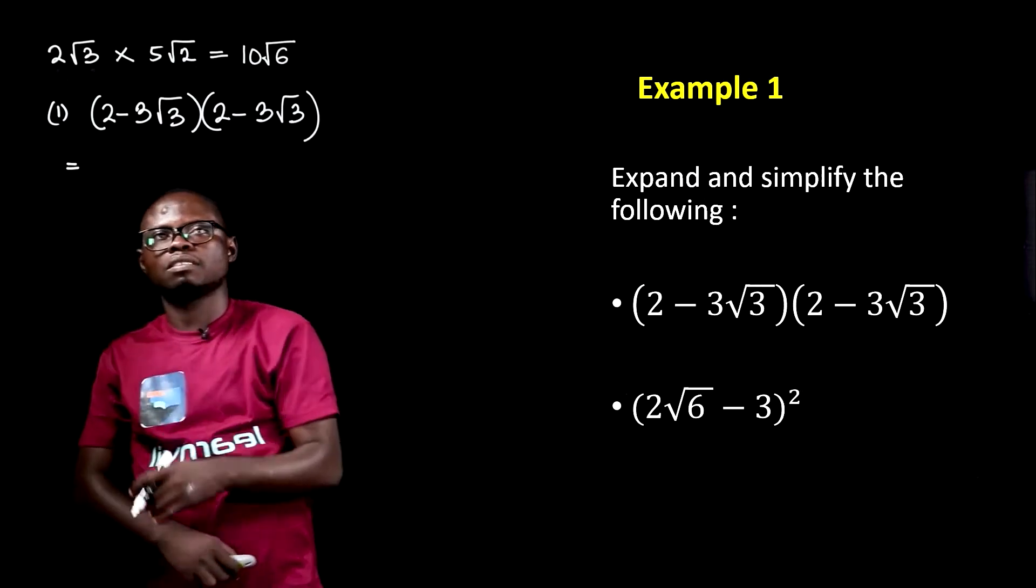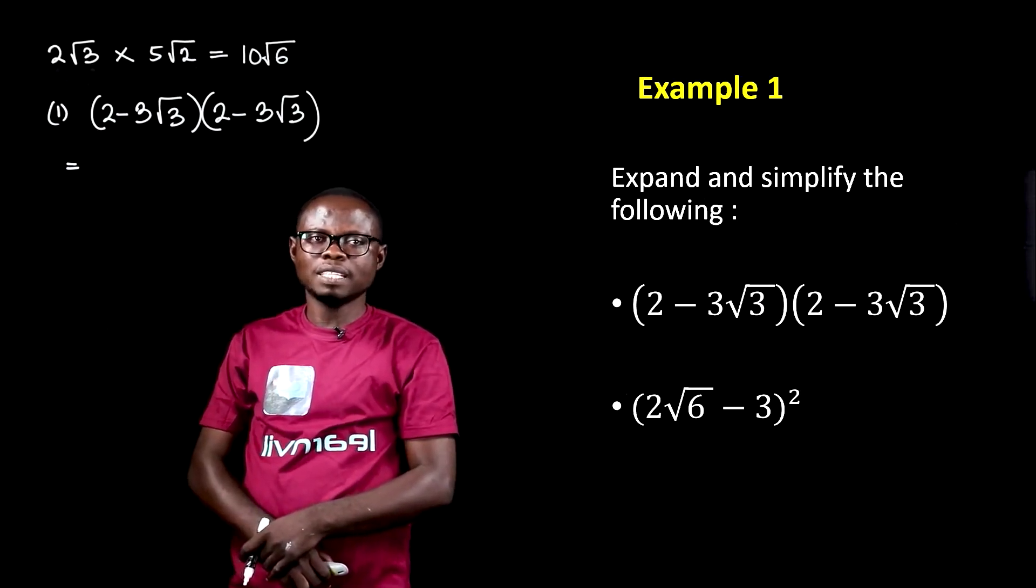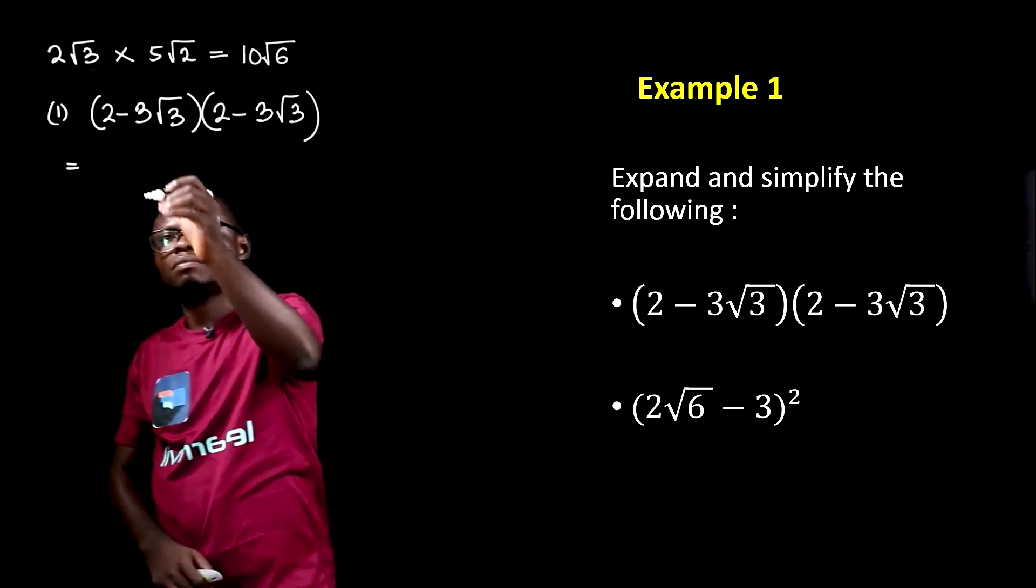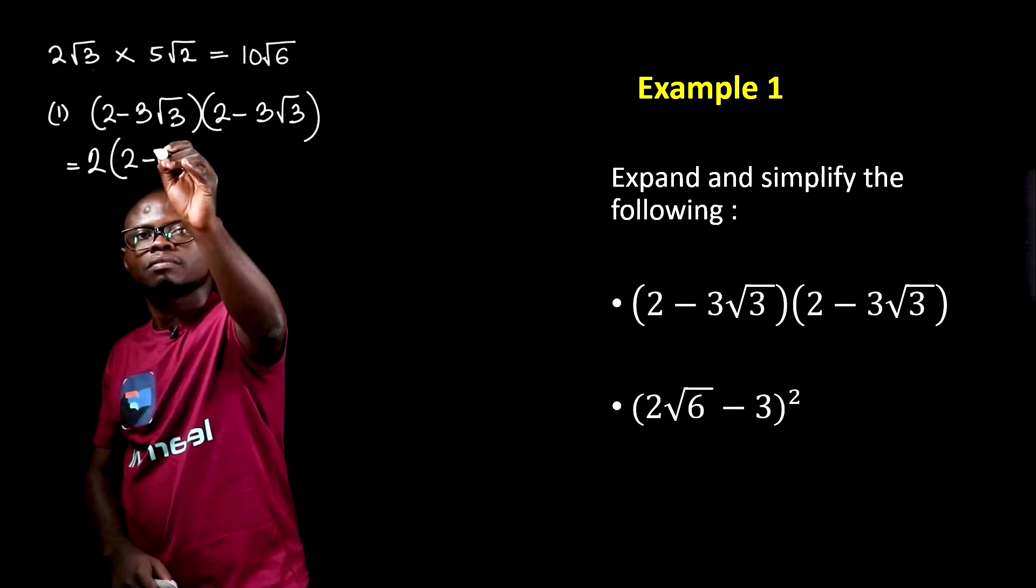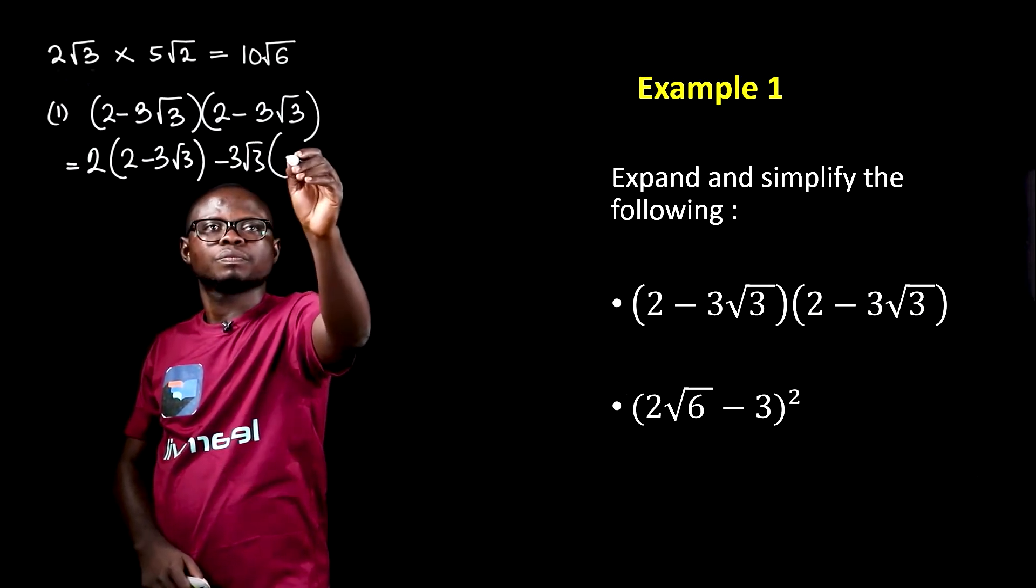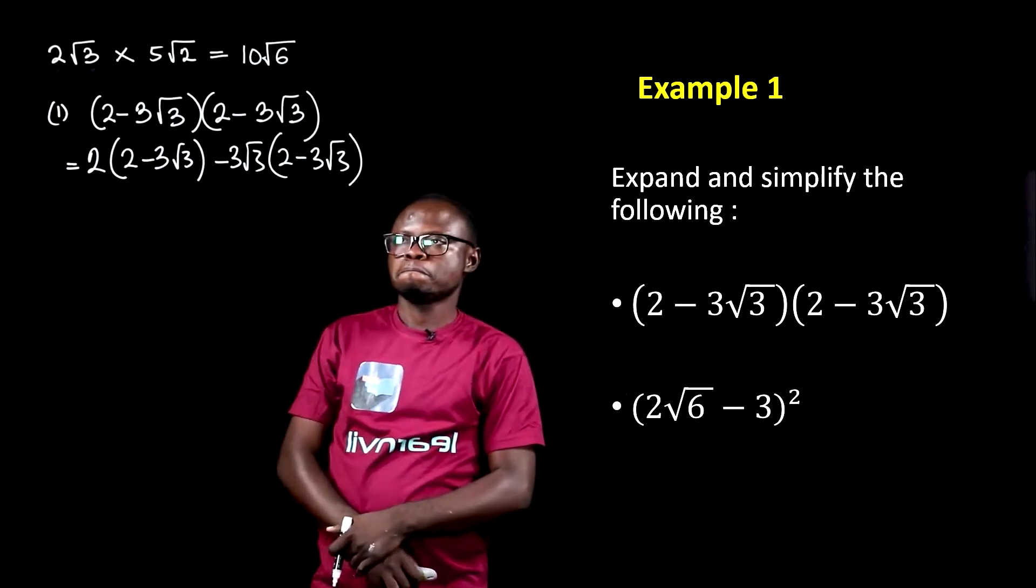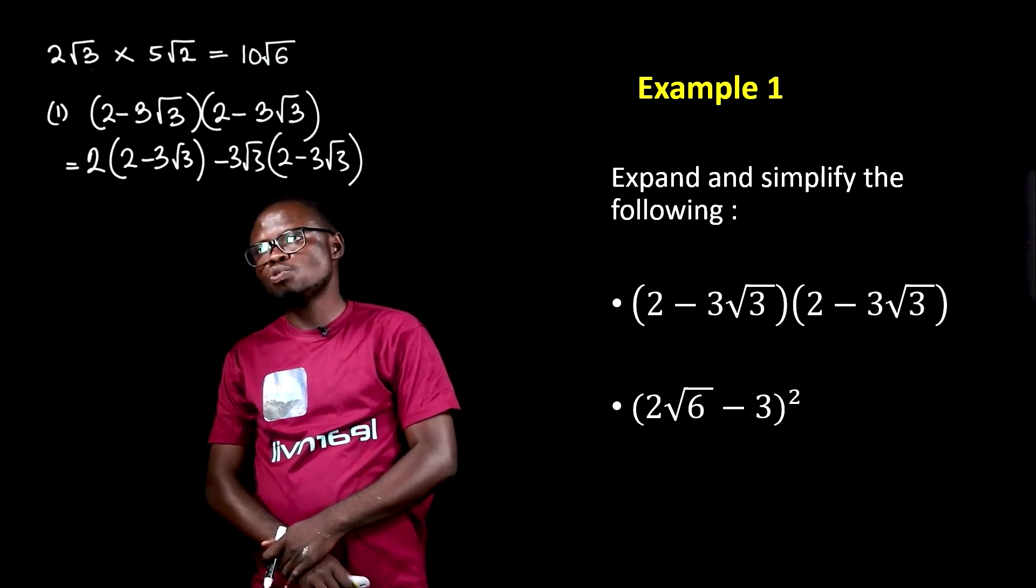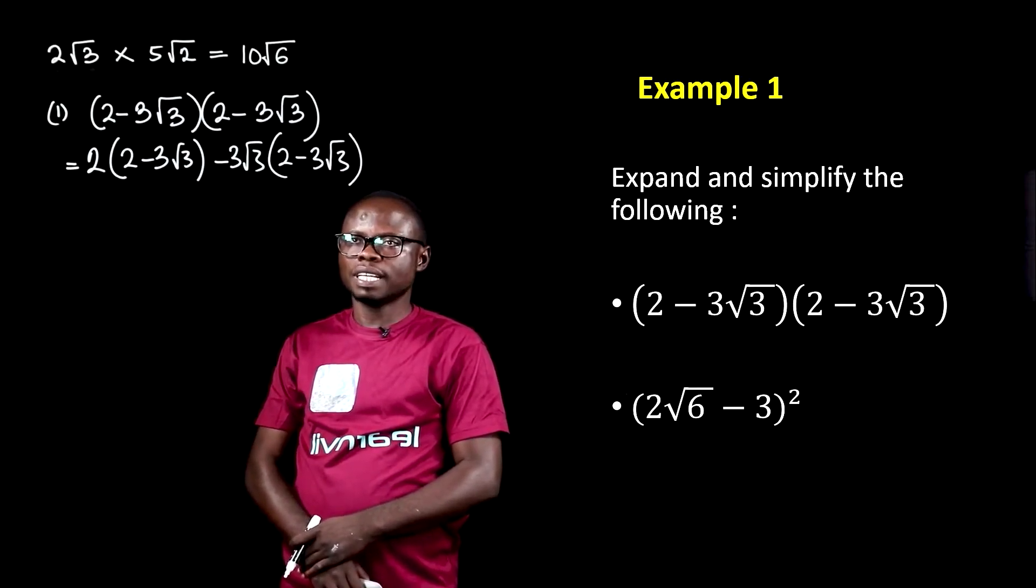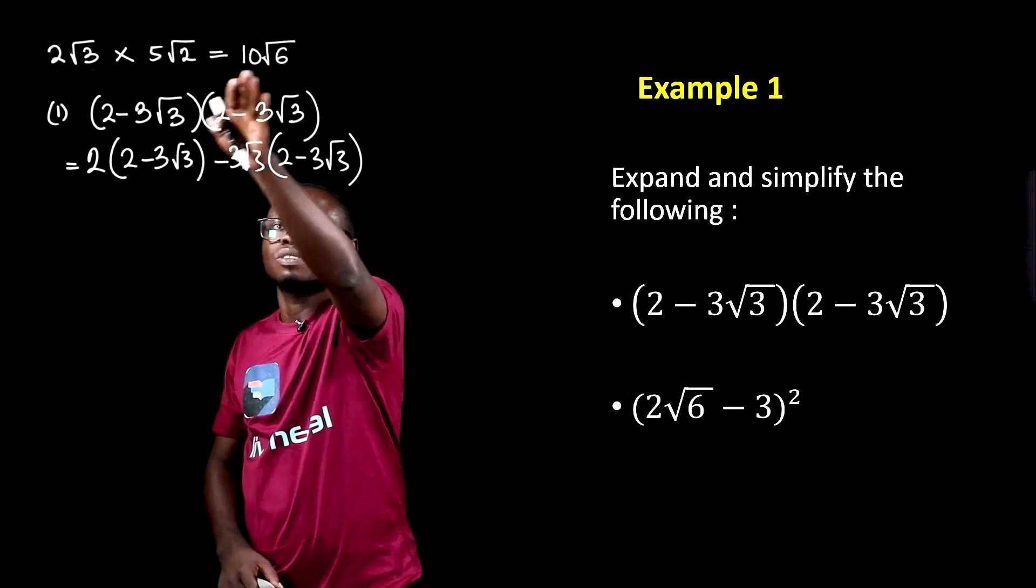To do this, we're going to pick each of the terms in the first bracket and multiply that by the whole of the second bracket. So it reads, 2 into bracket 2 minus 3 root 3, minus 3 root 3 into bracket 2 minus 3 root 3. So we have distributed this over this one.